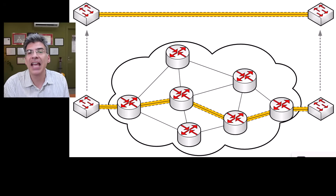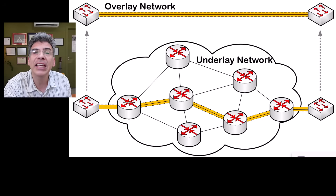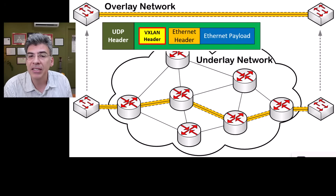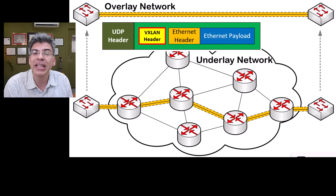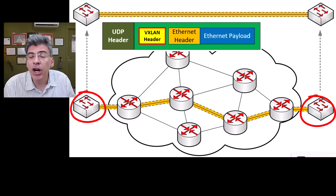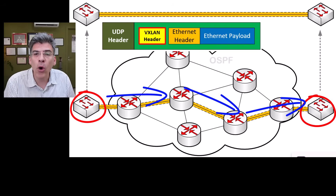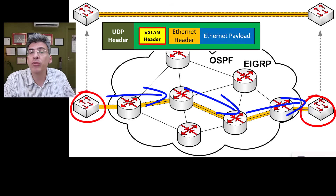At the very heart of VXLAN is the concept of an overlay and an underlay network. VXLAN essentially creates an overlay network by encapsulating Ethernet frames within UDP packets. This allows the creation of virtual Layer 2 networks over a Layer 3 underlay network. The underlay network is straightforward — its sole function is to transfer packets from point A to point B. It operates exclusively at Layer 3 without any Layer 2 involvement.